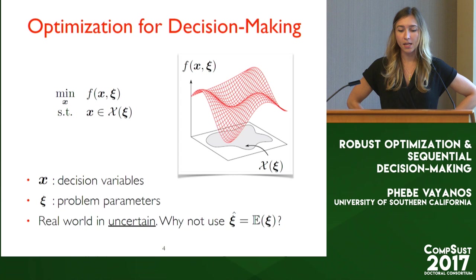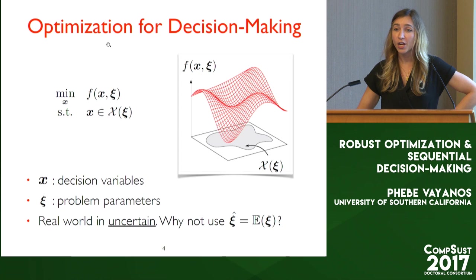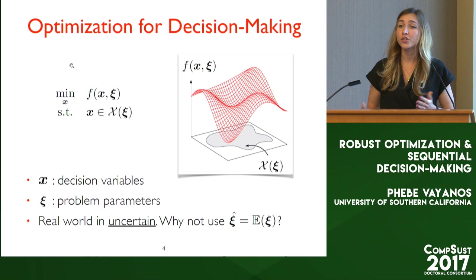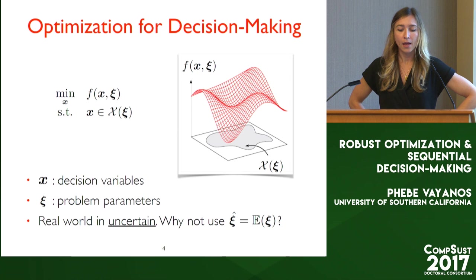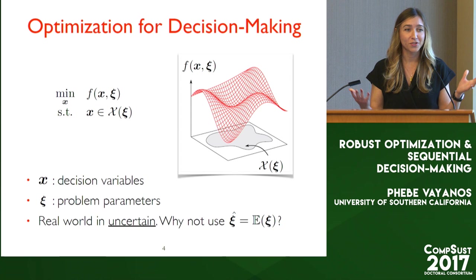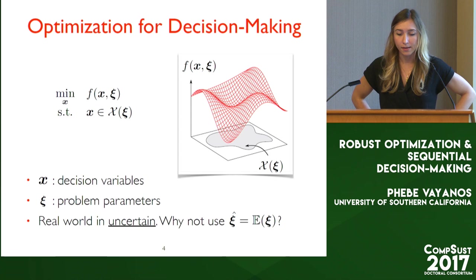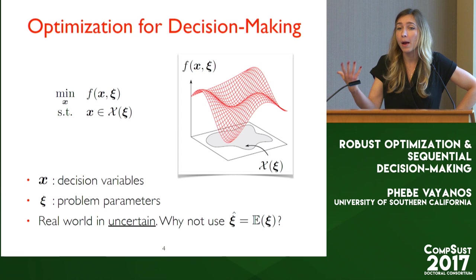In optimization, we model our decisions using decision variables — I'm calling these the vector x. We model our objective using a function f, which gives us a way to measure which decision we should prefer over another. We're trying to find a decision that achieves the smallest value of f. We also have, oftentimes in the real world, constraints that we encode using a set X, saying that not all decisions are feasible — for example, budget constraints. Both our objective and constraints are parameterized by Xi, which are some parameters of the problem.